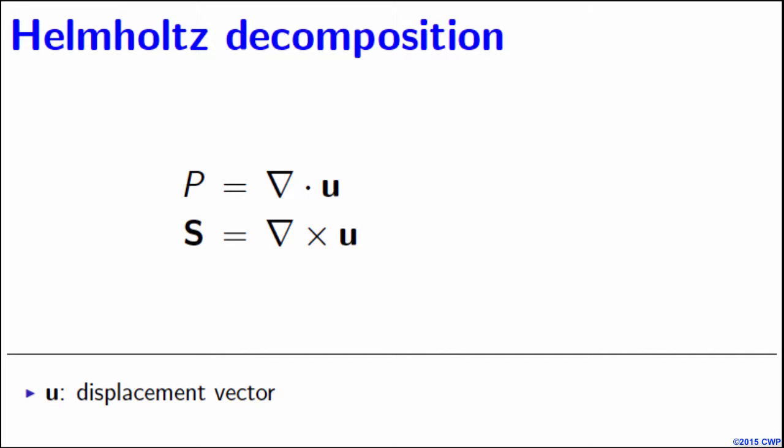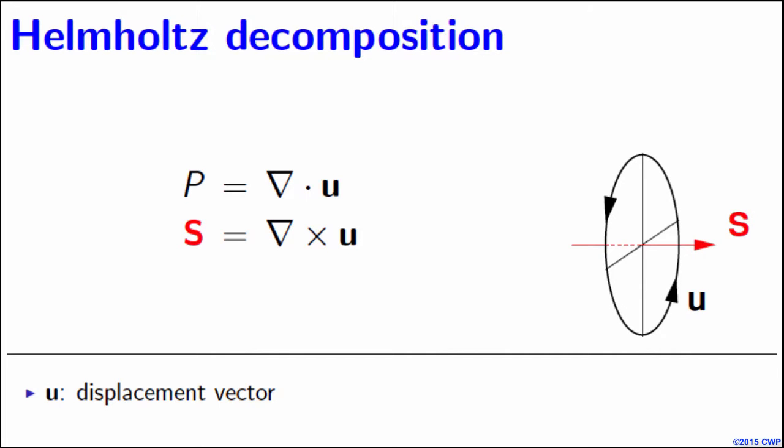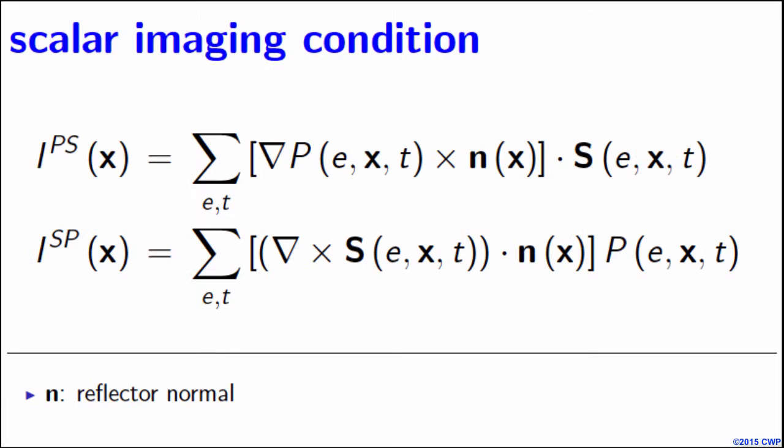P is a scalar while S is a vector. The direction of S is orthogonal to the wave motion plane of the SV wave. In this imaging condition, P is a scalar, N is a vector, and S is also a vector. Therefore, the PS and SP images are both scalars for both 2D and 3D cases. The sum over E and T means we do summation over experiment and time.